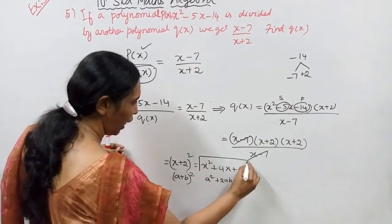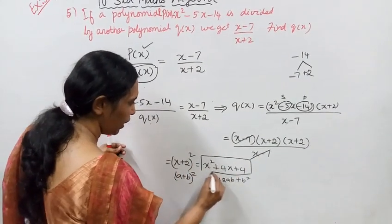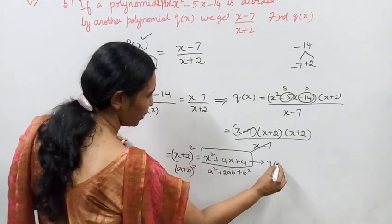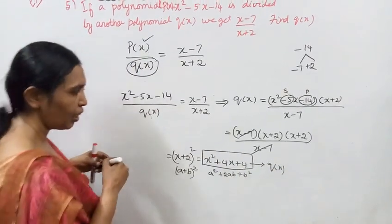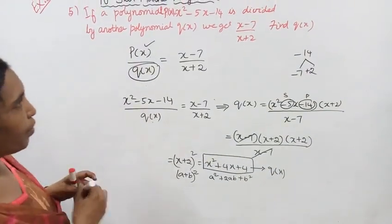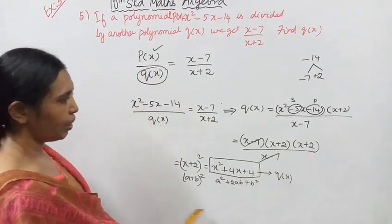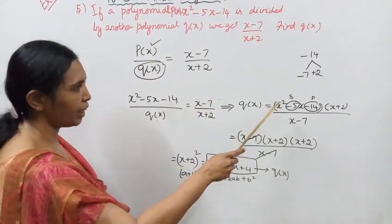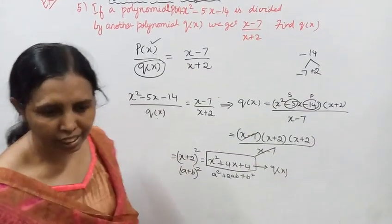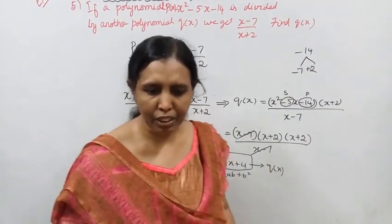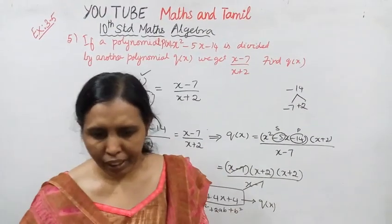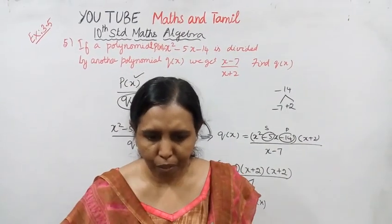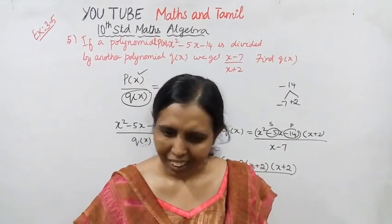This is the answer. Q of X is the whole square. We can factorize, cancel the numerator and denominator, and simplify the expression. We can simplify it.